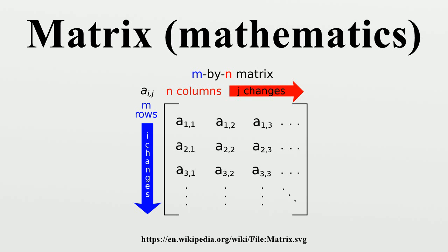Matrix multiplication of two matrices is defined if and only if the number of columns of the left matrix is the same as the number of rows of the right matrix. If A is an M by N matrix and B is an N by P matrix, then their matrix product AB is the M by P matrix whose entries are given by dot products of the corresponding row of A and the corresponding column of B. For example, the underlined entry 2340 in the product is calculated accordingly.